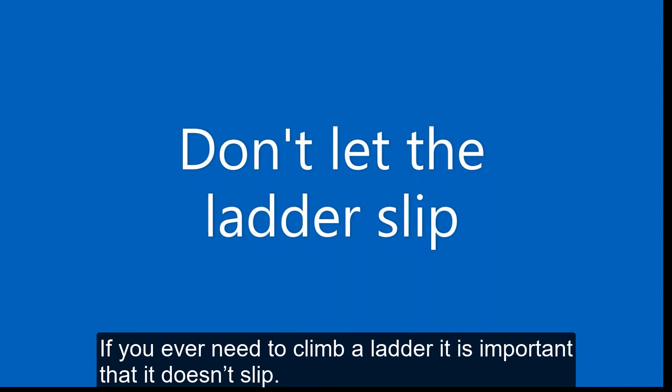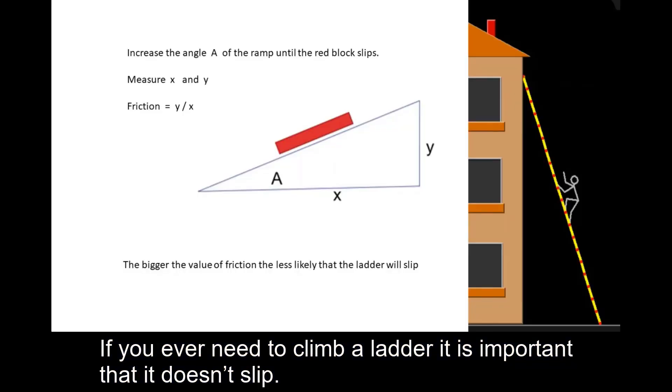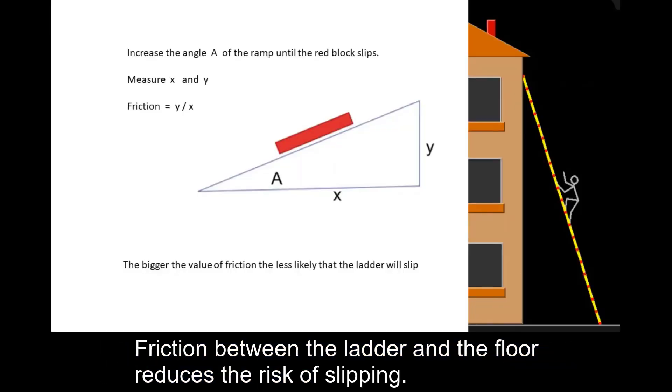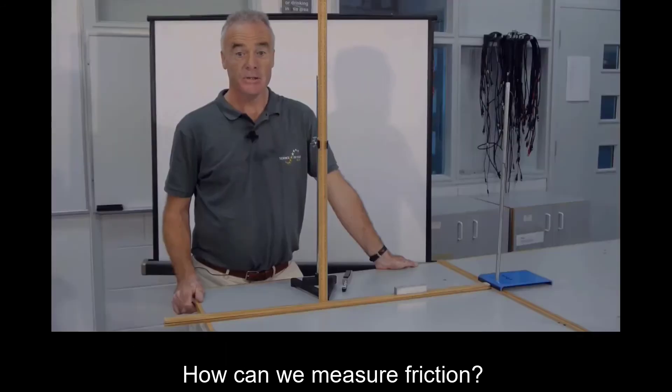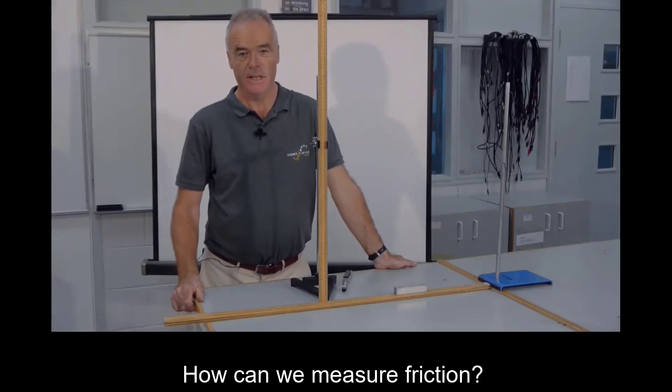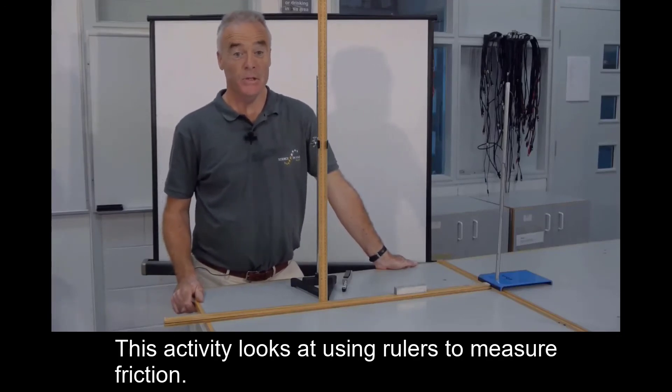If you ever need to climb a ladder, it is important that it doesn't slip. Friction between the ladder and the floor reduces the risk of slipping. How can we measure friction? This activity looks at using rulers to measure friction.